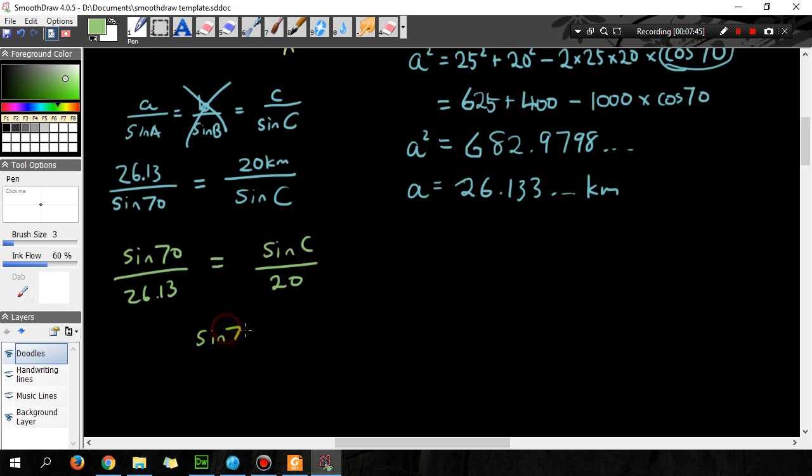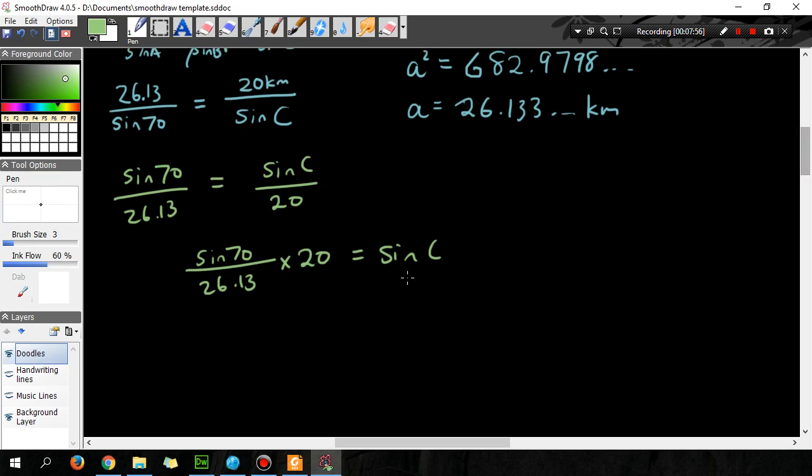So sin 70 over 26.13 times 20 equals sin C and then whatever this equals, I'm going to inverse sign that. I'm going to inverse sign whatever this thing equals and then that'll give me the answer.